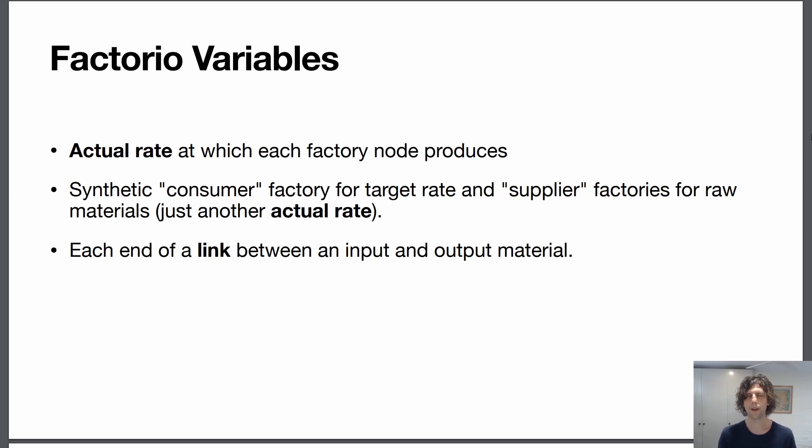So the rate at which each factory node produces, that's going to be a variable. We're also going to create synthetic consumer factories for our target rate, so that's the 10 science per second. And also supplier factories for raw materials such as the cogs and copper in our original example.